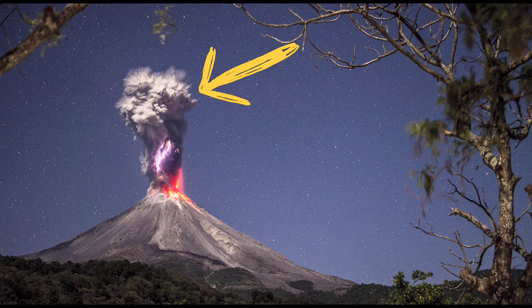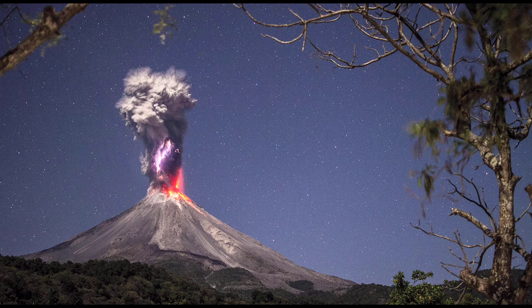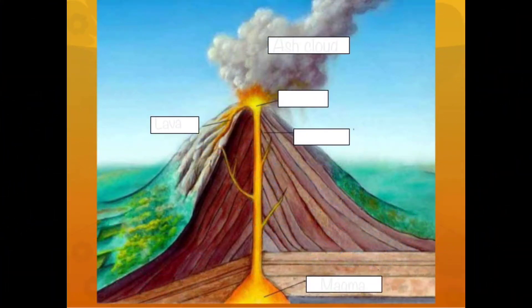There is a big ash cloud. It's full of small particles of hot rock, volcanic glass, and lots of other gases, and this is thrown out from an opening in the volcano.